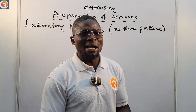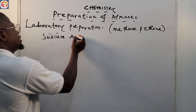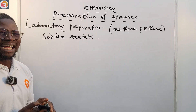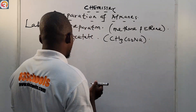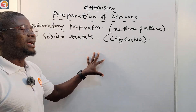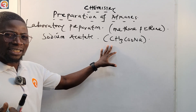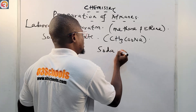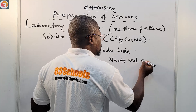For methane, we can use sodium acetate. Sodium acetate is CH₃COONa — it is a salt of a very weak acid. We can prepare methane in the laboratory by heating sodium acetate with soda lime. Soda lime is a mixture of sodium hydroxide (NaOH) and calcium hydroxide (CaO).